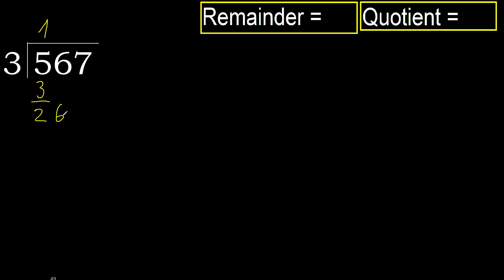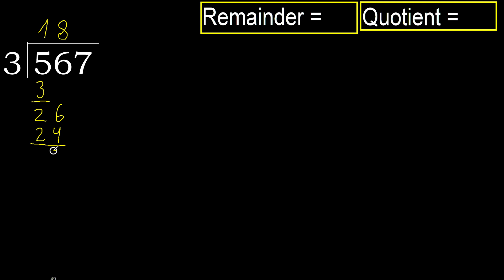26. 3 multiplied by 9 is 27, which is greater. Multiply by 8 is 24, not greater. Okay, subtract. 26 minus 24 is 2. Next, 27.